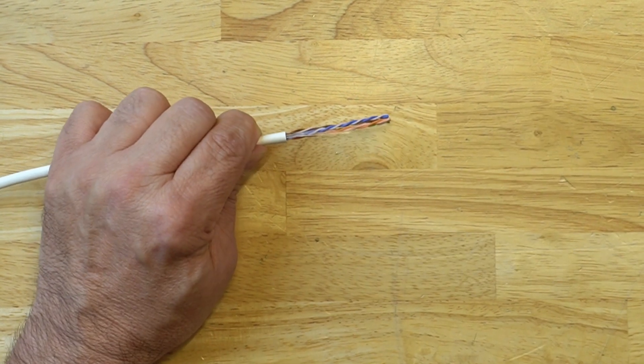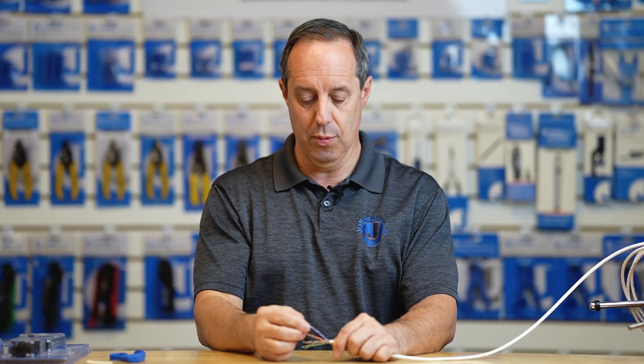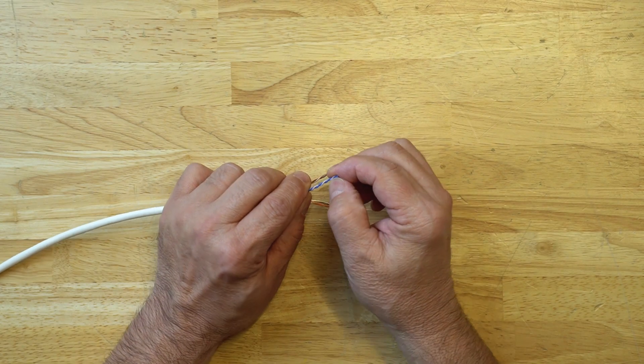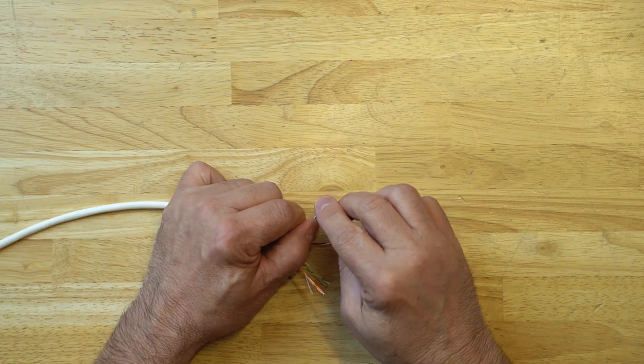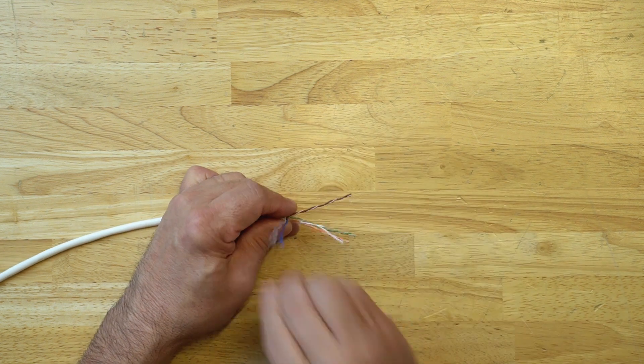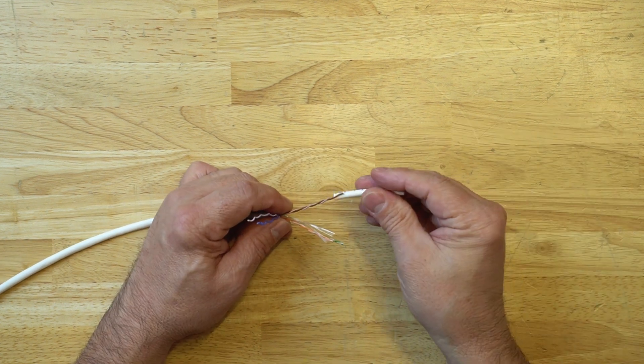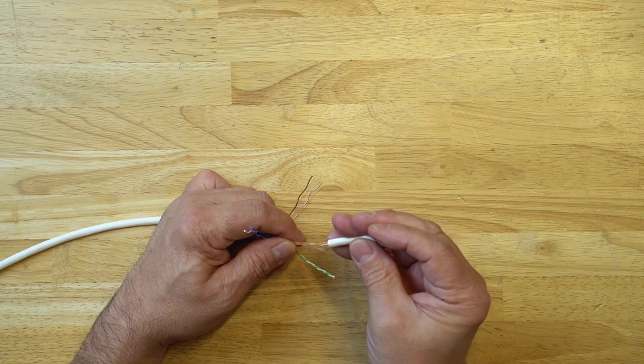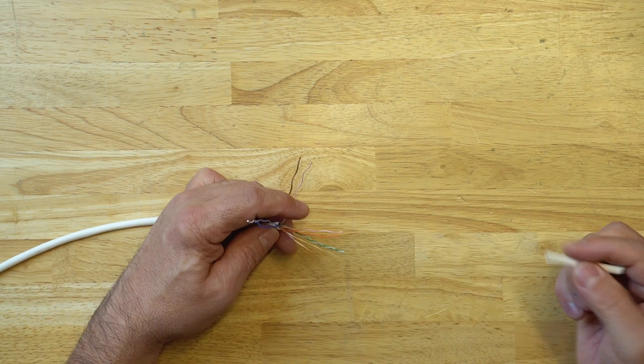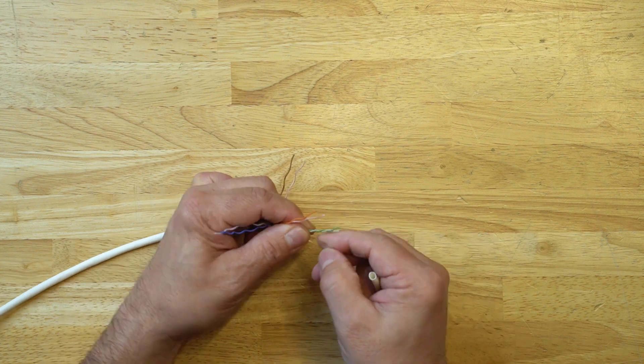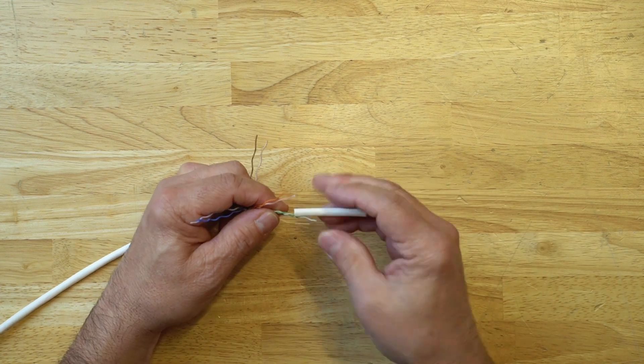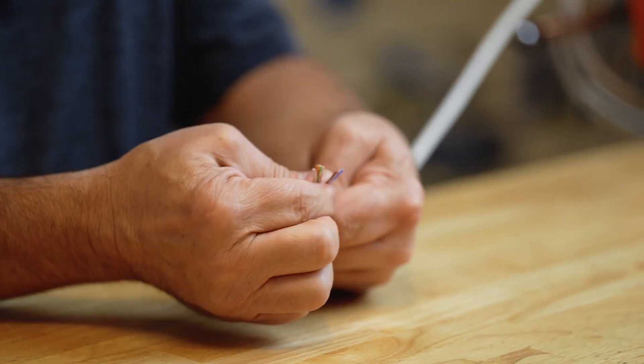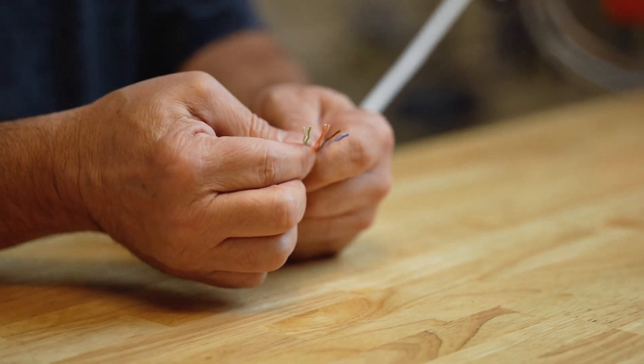Then stop and remove the jacket. So now what we're going to do is separate the wires, undo the twisted pairs. There's a couple of different ways to do that. I have recommended in the past saving the jacket and using the jacket you just stripped off to help you untwist the wires. Once you have the wires untwisted, you need to straighten them out.